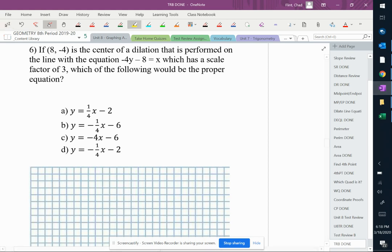We're dilating a line that is not centered at the origin. It's centered at (8, 4). That means we have to have this in y equals form so that we can graph it. We need a picture.